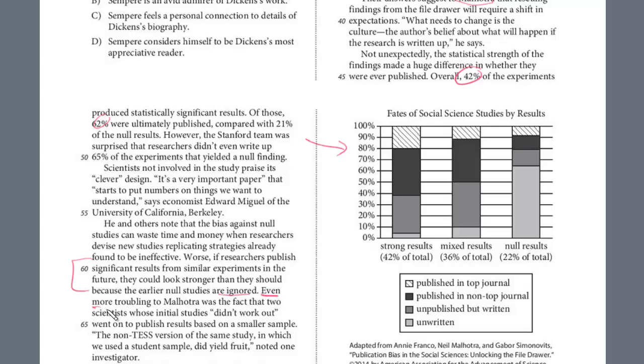They really kind of almost used the exact language we want strongly object from Malhotra. More troubling, even more to Malhotra was the fact that two scientists whose initial studies didn't work out, went on to publish results based on smaller sample. The non-TESS version of the same study in which we used a student sample did yield fruit, noted one investigator. So here, he finds it even more troubling that not only was the null result, like sometimes it's ignored,